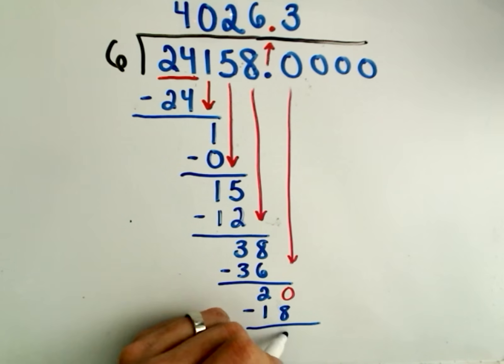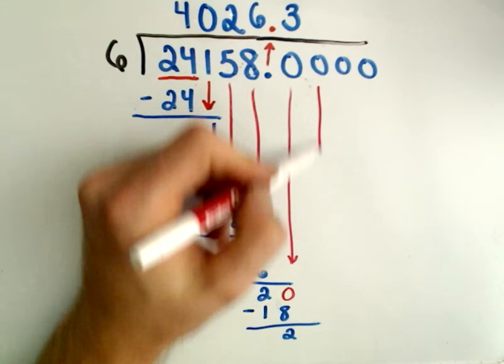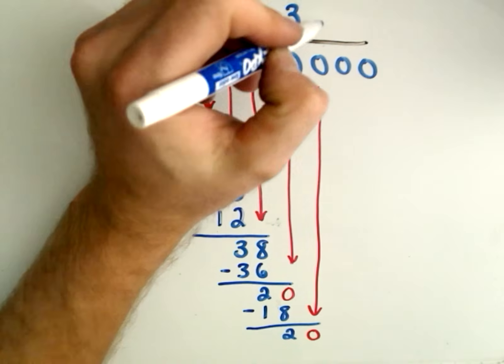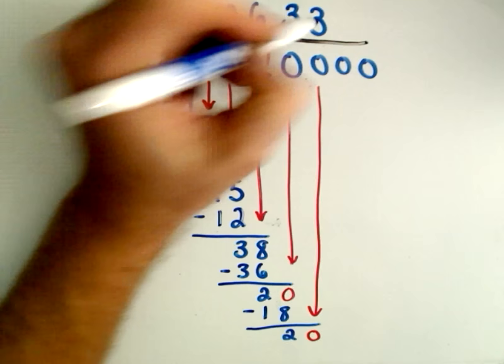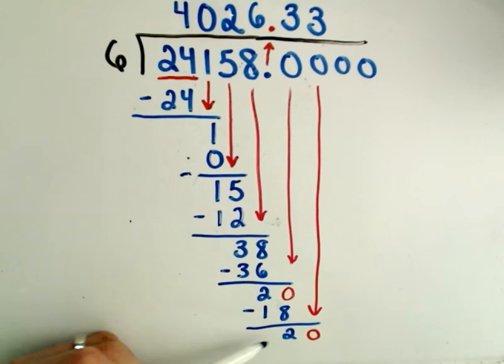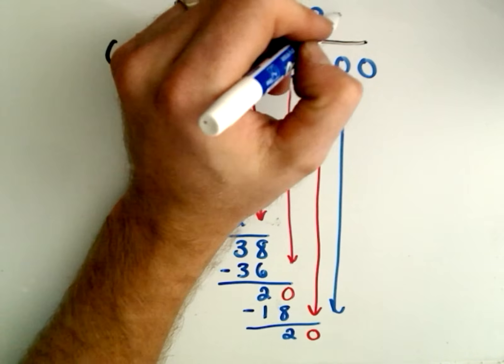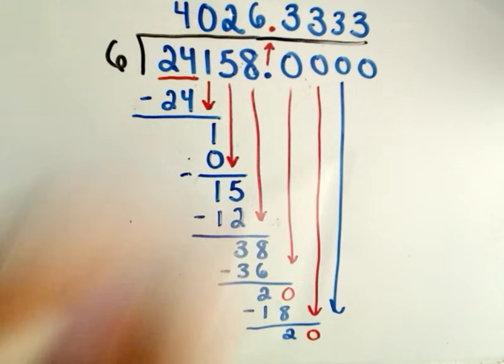Okay, so now if I subtract, 20 minus 18 is 2. Well, what's going to happen? We're going to get the same number that we had right before, we're going to get the number 20 again. Well, we're kind of caught in an infinite little loop here because when I put a 3 up here, because that's the whole number of times 6 will go into the number 20, I'm going to get another 18. I'll subtract, I'll get a 20, I'll drop down another zero, and I'm going to keep getting threes forever and ever and ever.